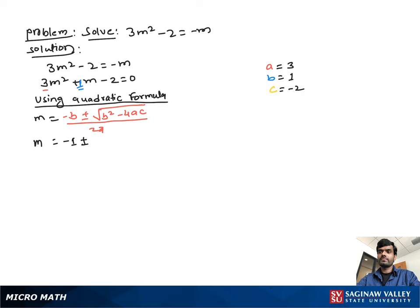Now substituting the values of a, b, and c into this equation, we get m equal to negative 1 plus or minus square root of 1 squared minus 4 times 3 times negative 2, all over 2 times 3.